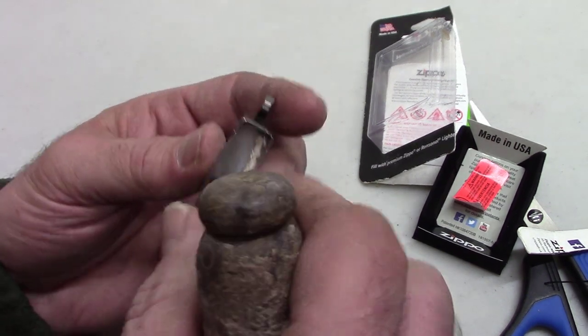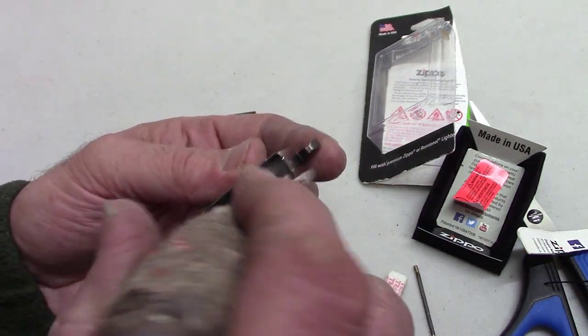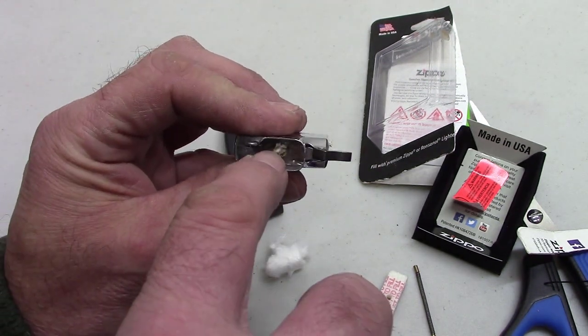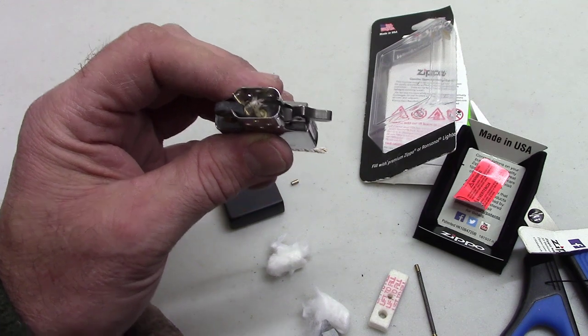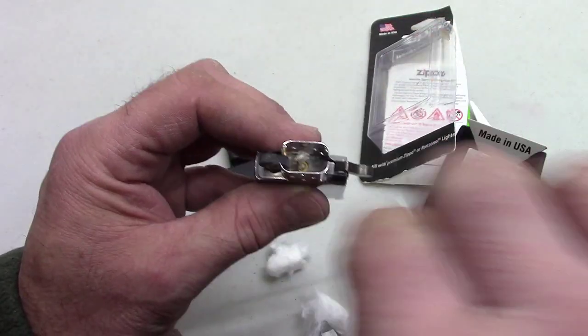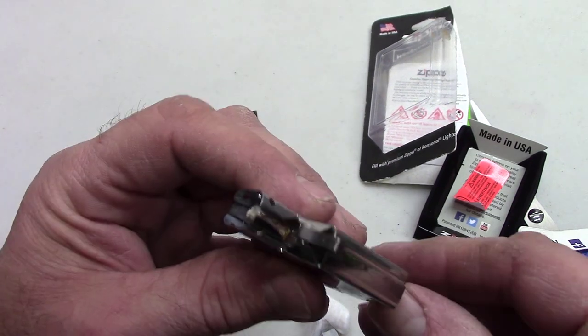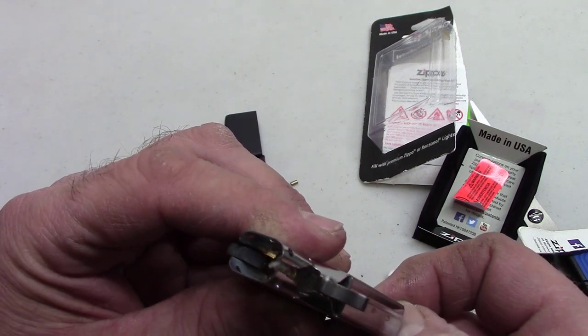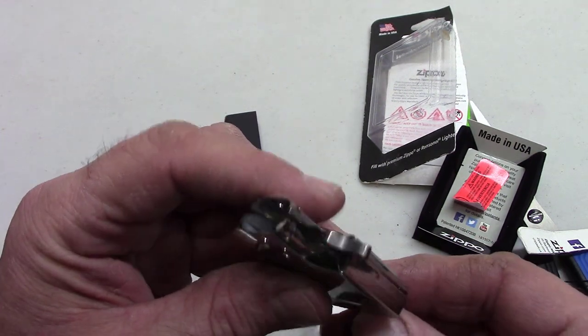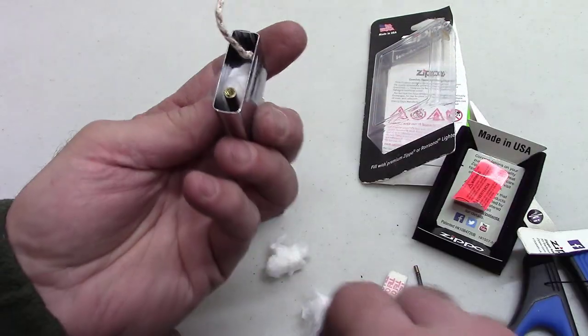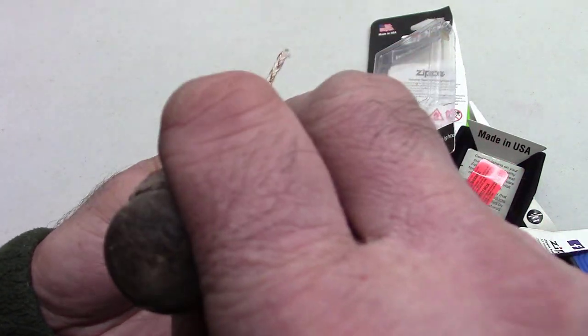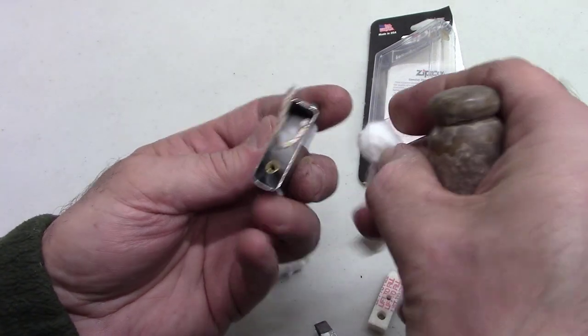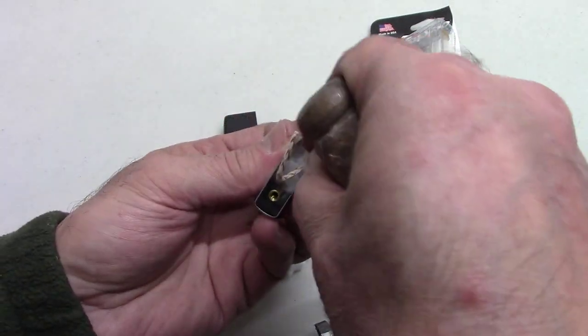You can buy spare wicks. It's rare that you need a new wick, but every so often that gets too short and just pull it up with a pair of tweezers, chop it off. You might have to pull it back down, you can adjust that to the height that you like. So that's a really good tip to make sure that that wick is spread around.